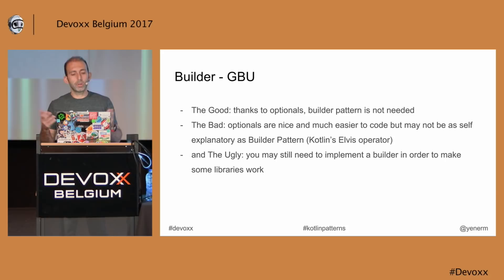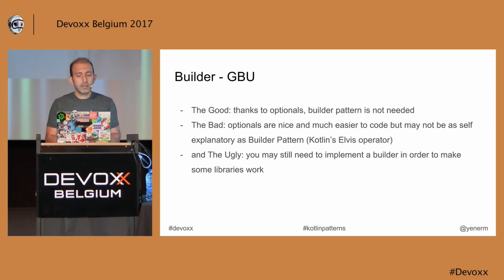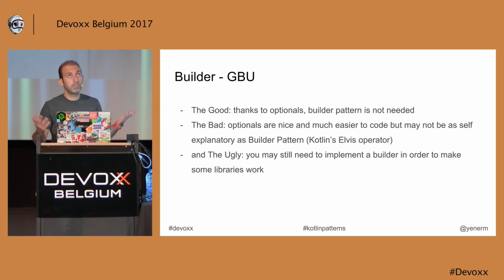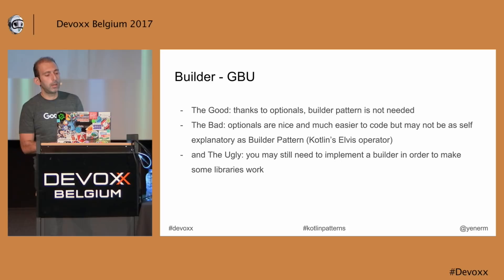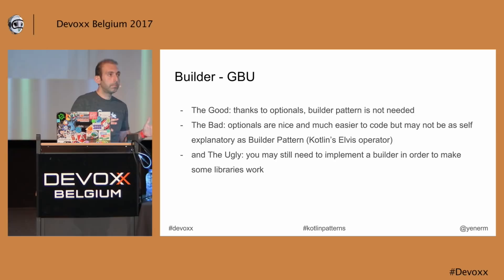The good, the bad, the ugly: thanks to optionals, the Builder pattern is not really needed in Kotlin. Optionals are nice and much easier to code. But they may not be as self-explanatory as Builder pattern — someone familiar with Builder can easily understand what's going on, but optionals might not be that clear if you don't know the parameter list. The ugly part is if you need to do really complicated stuff or need some libraries to work, you may still need the Builder.